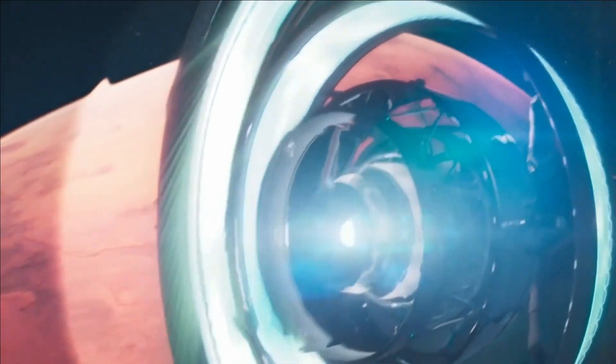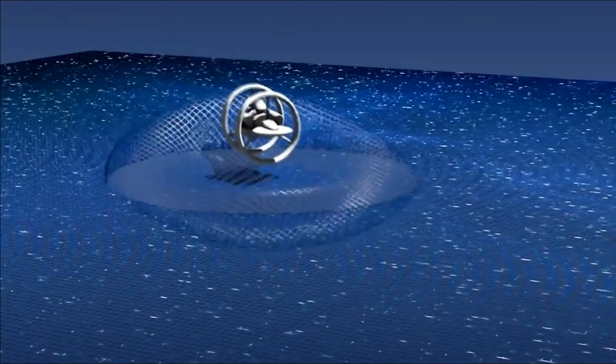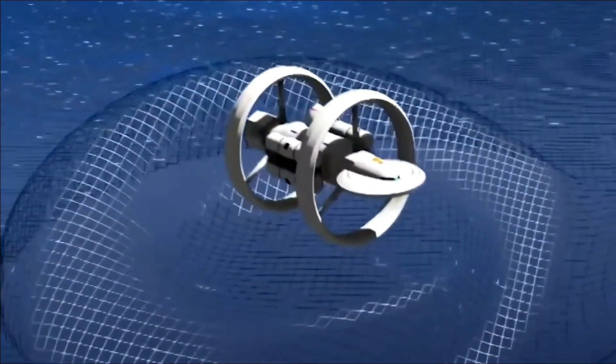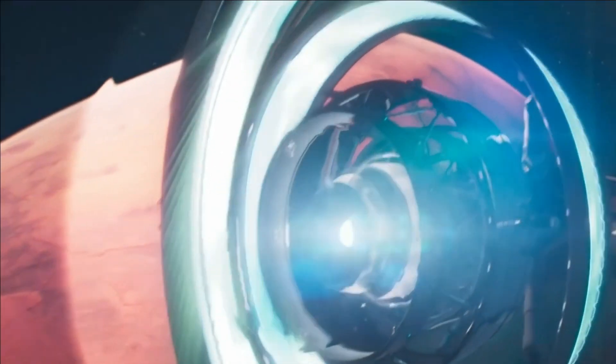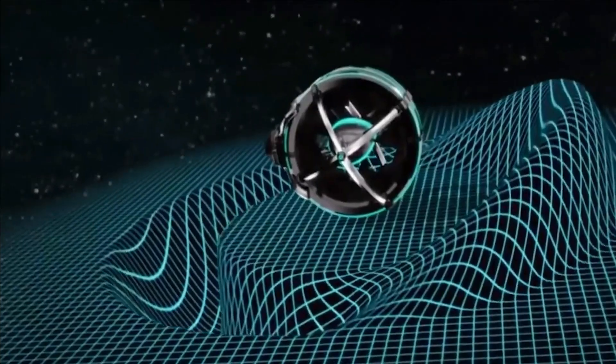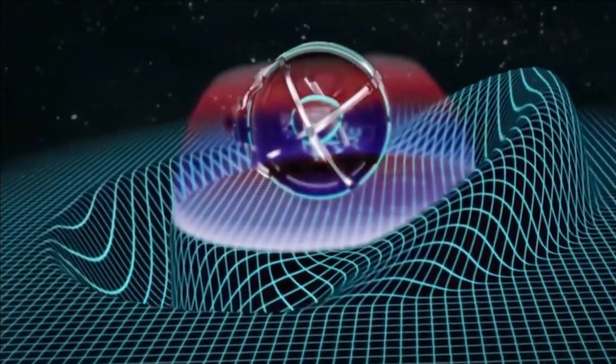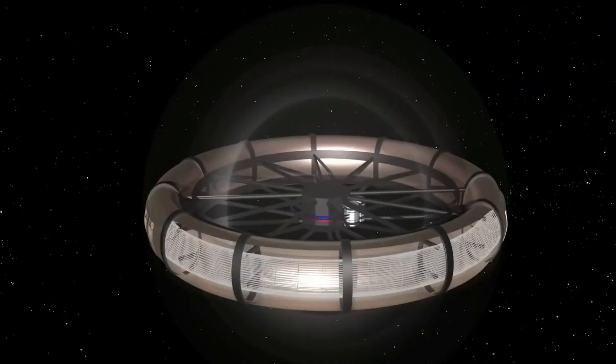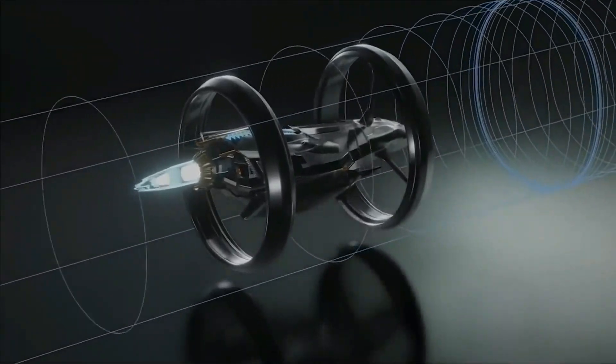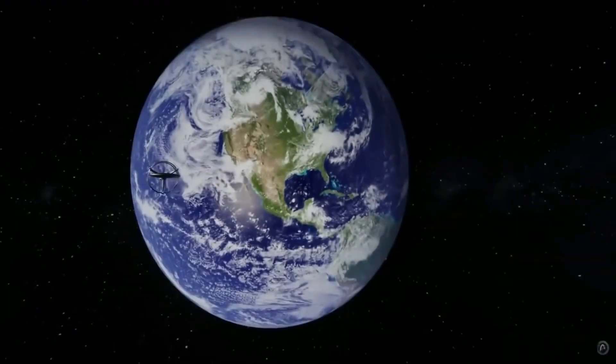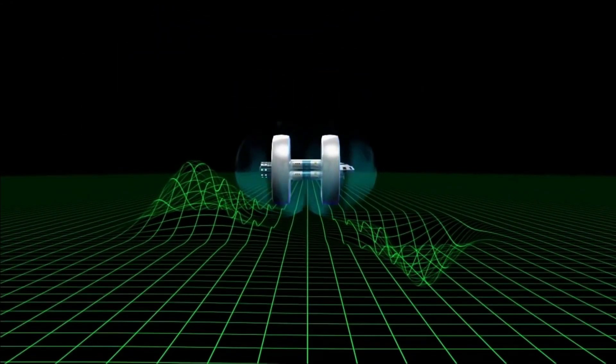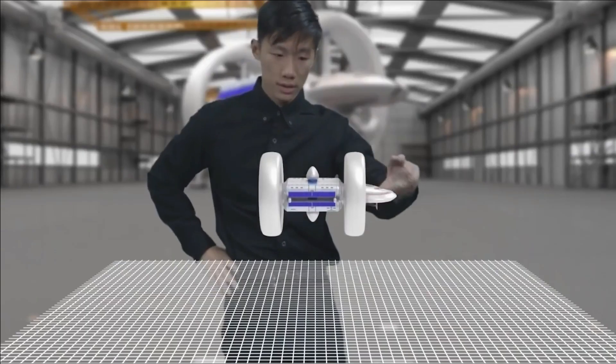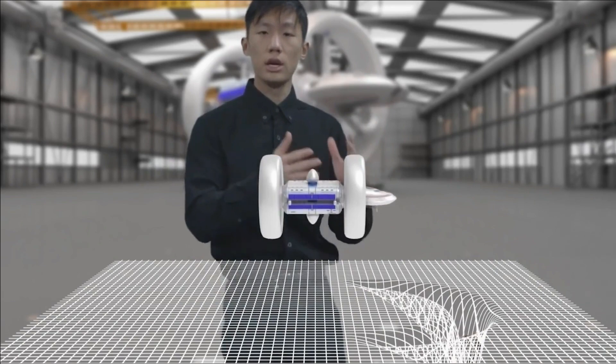Instead, he says a solution proposed by physicist Jose Natario back in 2002 showed that the expansion and contraction weren't necessary to transport the ship forward. That work prompted him to rethink how a warp could be created using only traditional matter and not exotic matter. Natario was able to prove that the expansion could be trivial or zero everywhere and still perform the same task of transporting a ship.